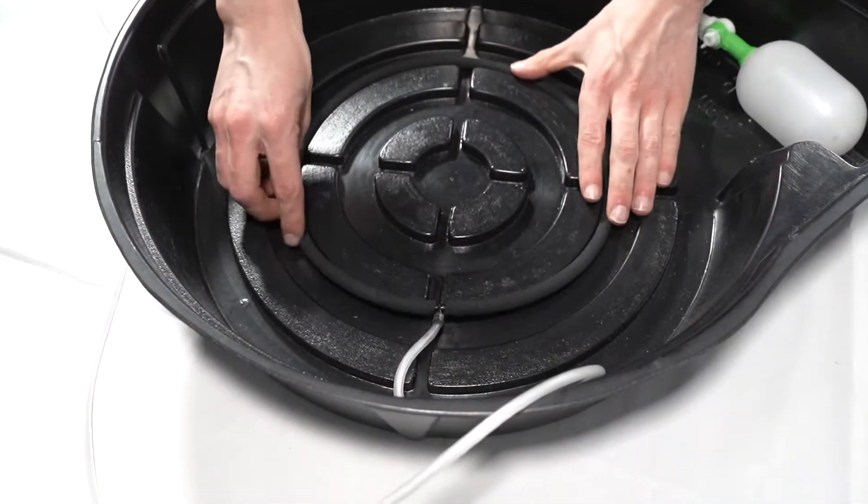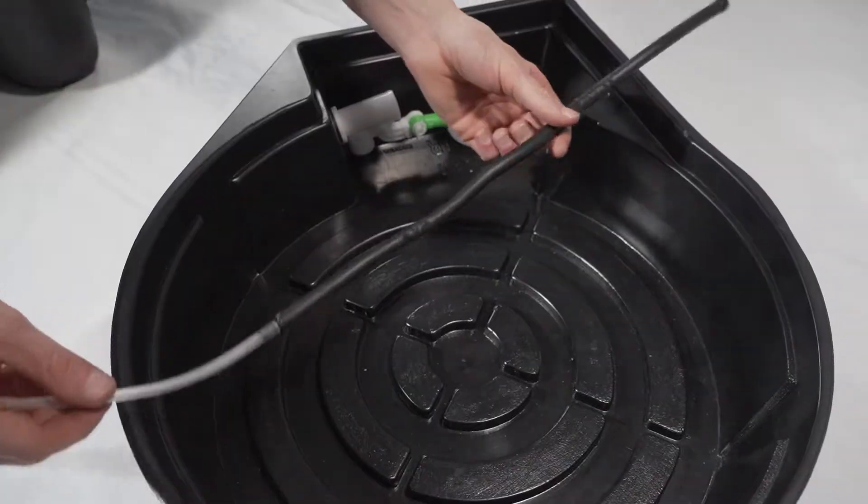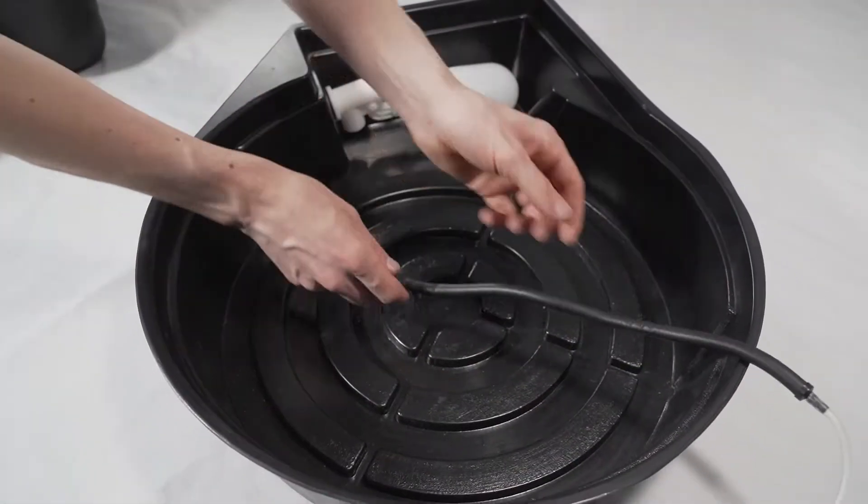If you are using an air curtain, place it in the tapered slots of the raised bed, as seen here, and run your air line the same way.